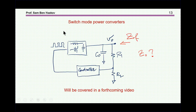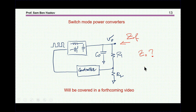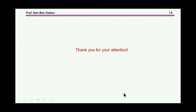What about switch-mode power converters? There's no question you can get the closed-loop output impedance as a function of frequency — just inject the current and measure the voltage. The open-loop impedance is more complex in some cases, and that's beyond this video; I hope to cover it in a forthcoming presentation. This brings me to the end of this presentation. I hope you've enjoyed it and that it will be useful to you. Thank you very much.